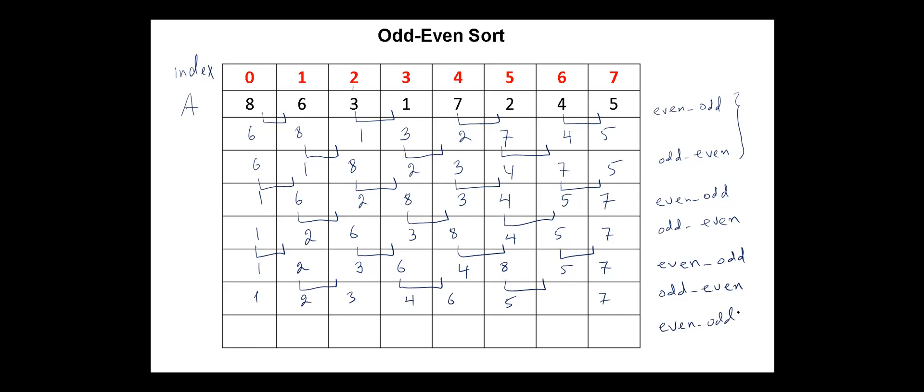Next again, even-odd pairs. One and two in their positions. Three, four in their positions. Six, five. We have to swap them. Here we have eight. Eight, seven. We have to swap them. So now the array is sorted.